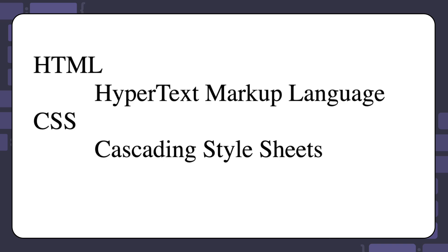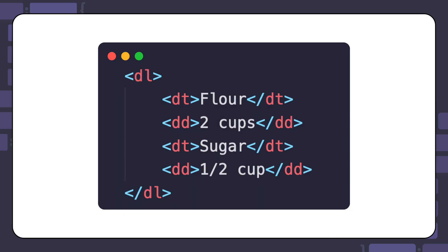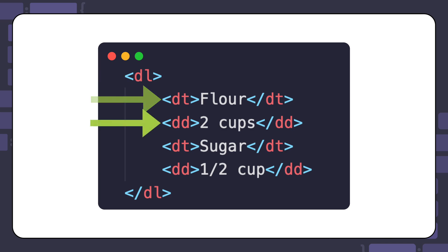But description lists are not limited to only terms and definitions — they are much more versatile than that. Here we have a recipe with two ingredients. The entire description list is within a description list element. The first ingredient, flour, is within a description term element. Then you can see how much of this ingredient you will need: two cups. This is within a description details element directly after its corresponding ingredient. And the same structure is repeated for sugar.